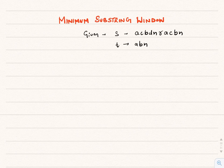Consider the given example. The main string S is A, C, B, D, N, R, A, C, B, and N. And the pattern string T is A, B, N.